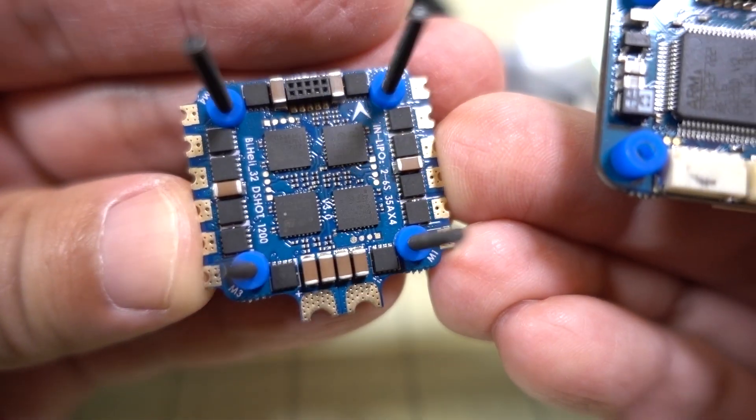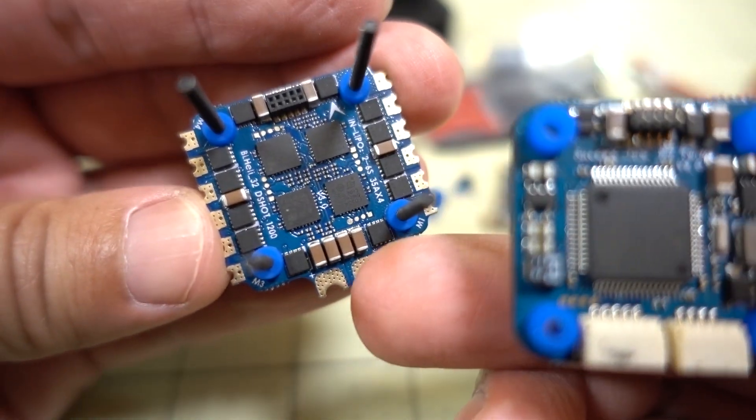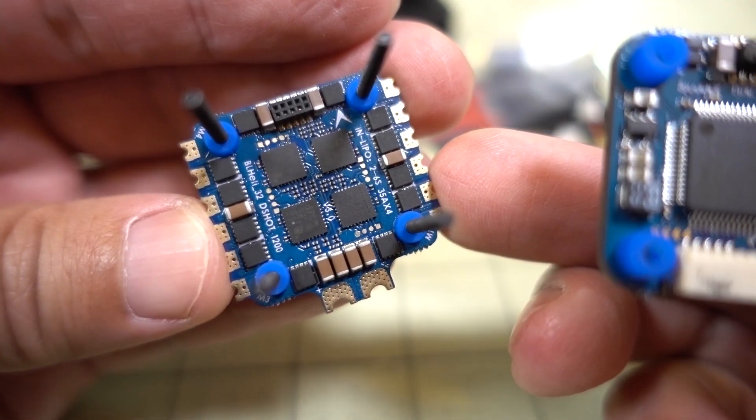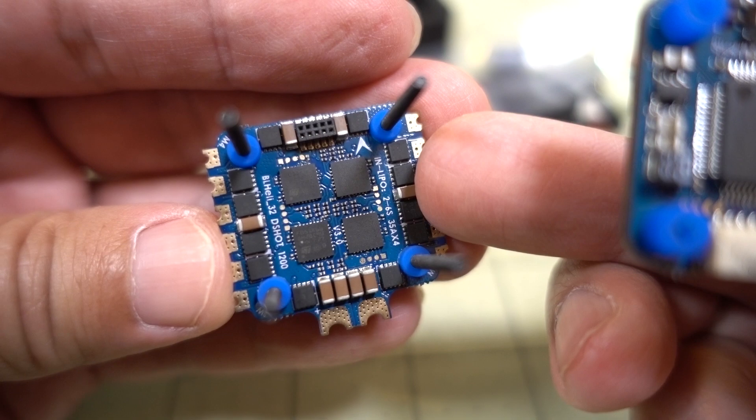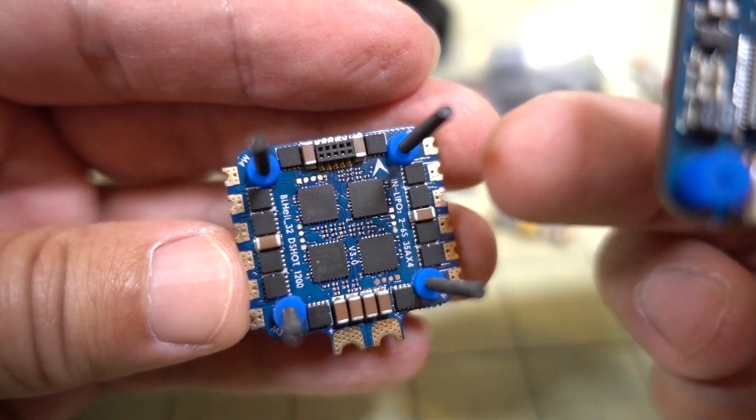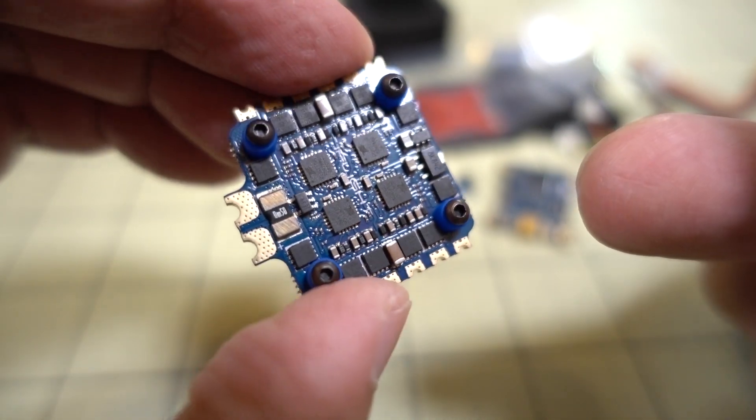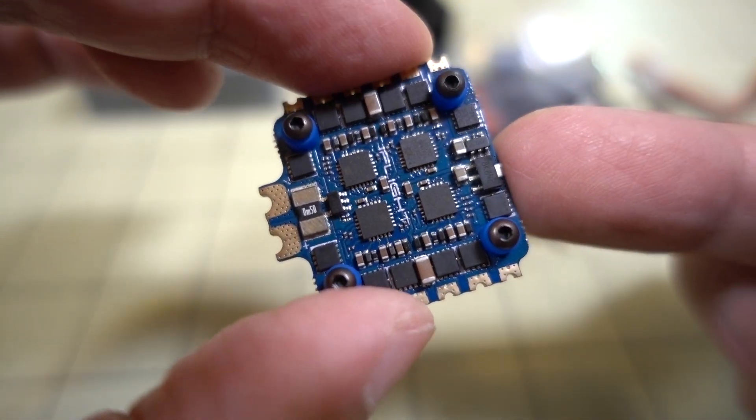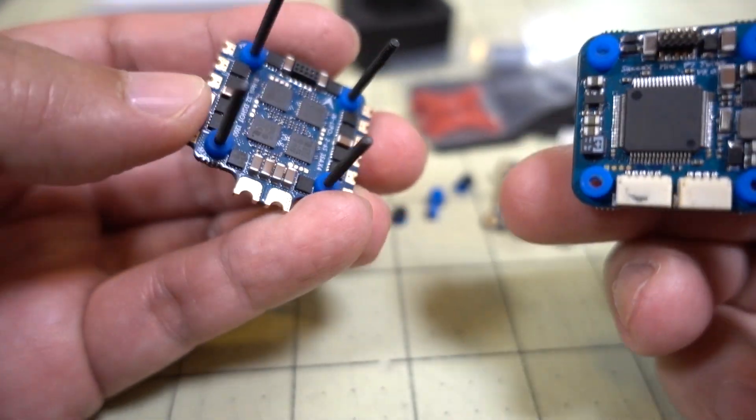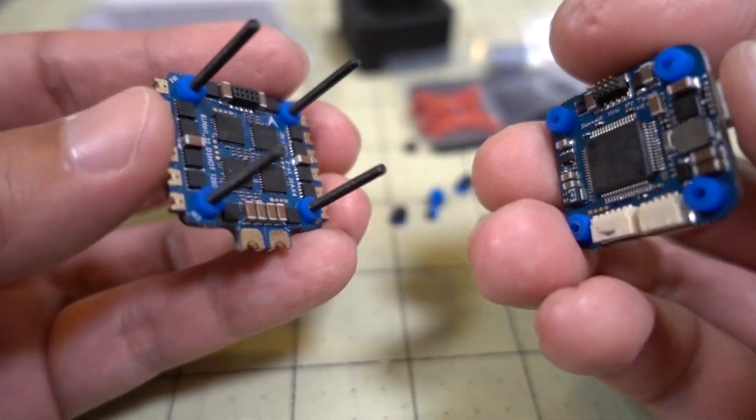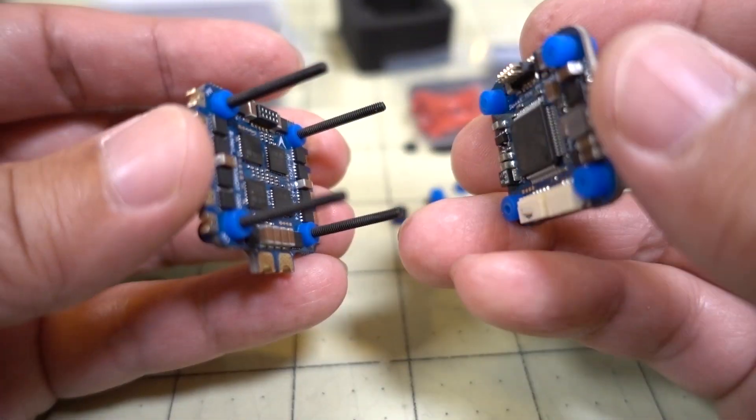And this is the top side of the 4-in-1 ESC. You got some filtering there. Four capacitors there. Not a whole lot. Actually a couple here, one more there, one more there. So four more around the edge for additional filtering. And then you have a few on the bottom as well. That's pretty much it. Let me go ahead and put this back together and I'll show you how much this thing weighs.